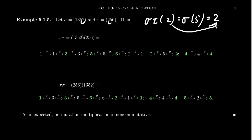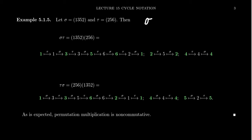For composition, you read both cycles right next to each other, reading right to left, because the function on the right interacts with the element first. For example, what happens to 1? Tau doesn't do anything to 1 — one is fixed. So tau sends 1 to 1, then sigma sends 1 to 3. So sigma tau sends 1 to 3, which we record.